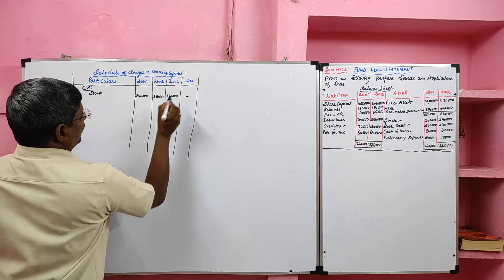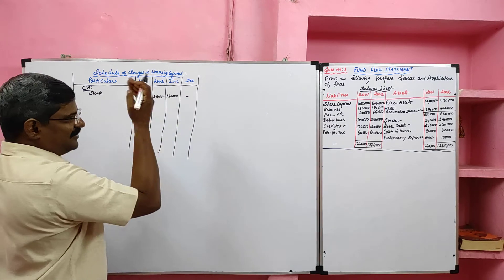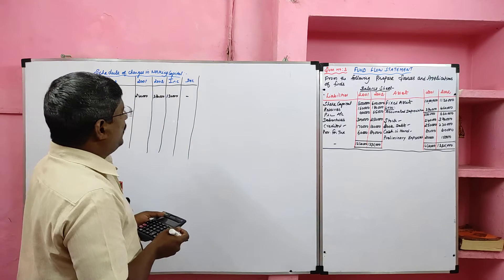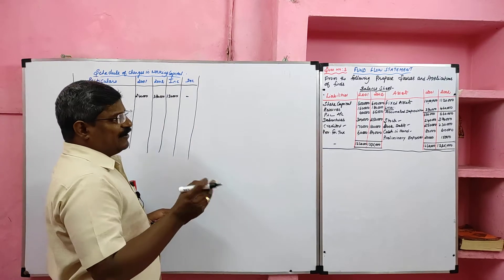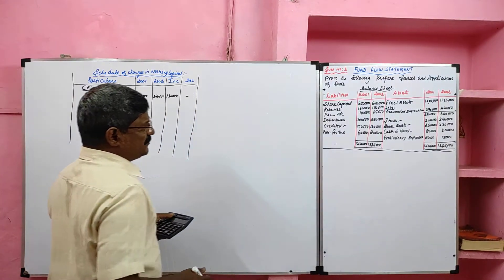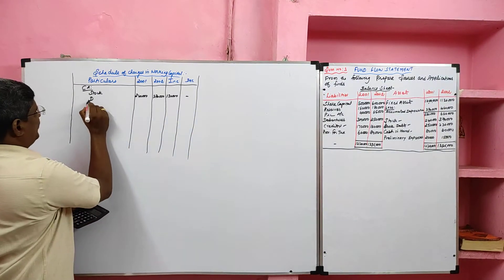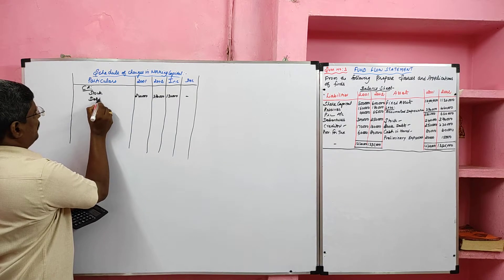Stock's opening balance is 2,40,000 and closing balance is 3,70,000. The change is 3,70,000 minus 2,40,000 equals 1,30,000. This automatically increases the working capital because when a current asset increases, it results in an increase in working capital. Next, book debts meaning debtors.